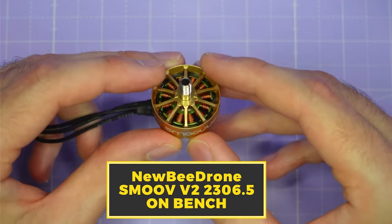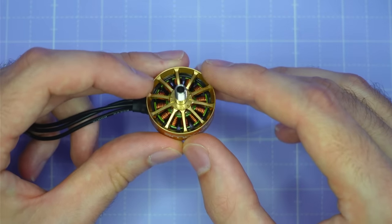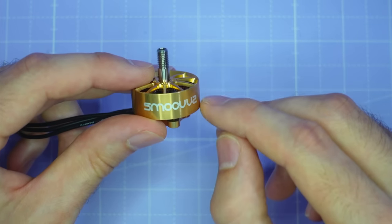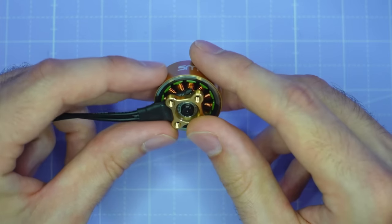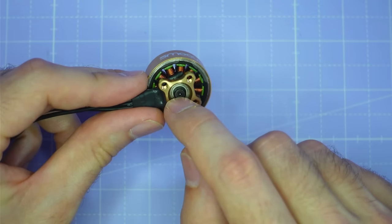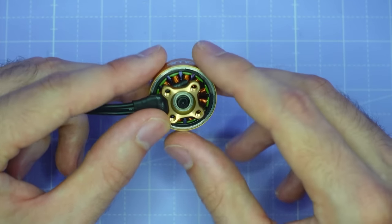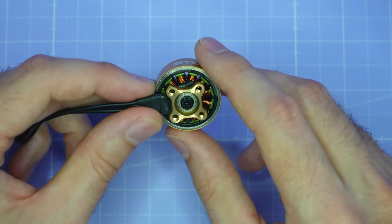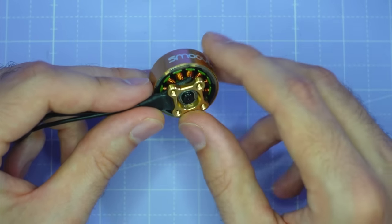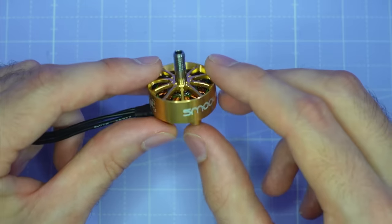Let's look at the Smooth V2 now and the Smooth V2 has a lot of similarities to the Flow V2 we just looked at. The bell design is identical it's got that 10-spoke design and the unibell construction. The first difference I noticed is that the shaft screw on the Smooth V2 is an M2 countersunk screw rather than the M3 screw on the Flow and usually I prefer M3 shaft screws just because they're less likely to strip out but let's take this M2 screw out and see how we get on and then I can show you the differences in the internal construction of this motor compared to the Flow.